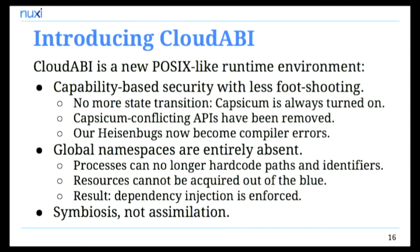This allows us to remove all the features from POSIX that conflict with Capsicum. There is no longer an open call that allows you to open an arbitrary file by path name — there is only the POSIX openat function that allows you to open a file underneath a directory. There is no longer a bind call to bind to an IP address, and no connect call — though I'll explain workarounds for that later. What's nice about this model is that instead of dealing with all those Heisenbugs, hidden bugs, and Mandelbugs, all issues caused by sandboxing are now just simple compiler errors.